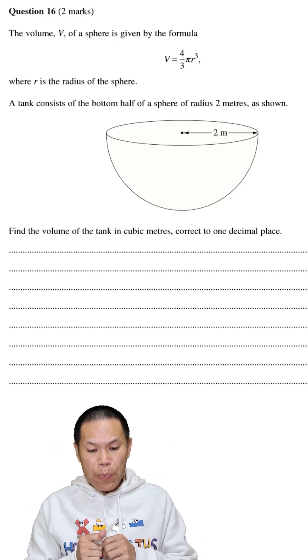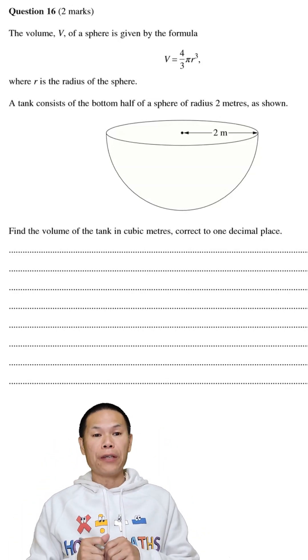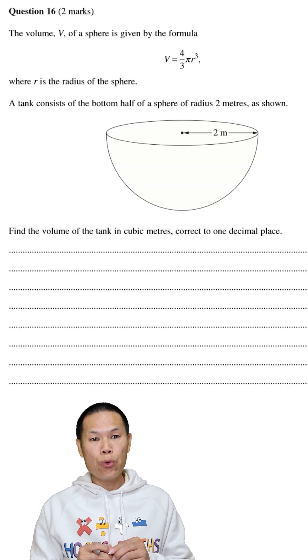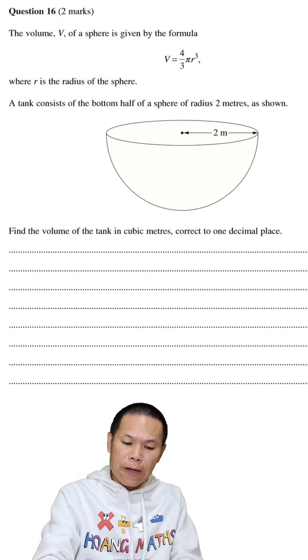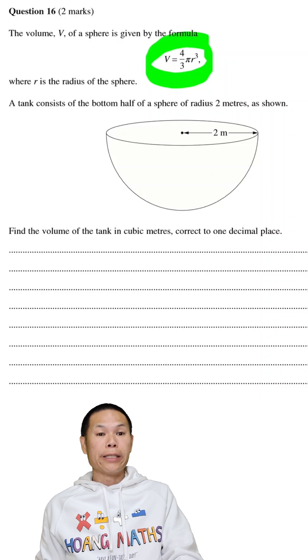We need to work out the volume of this half of a sphere, and the radius is 2 meters. First of all, we know the volume of a sphere, so let me just write this down.